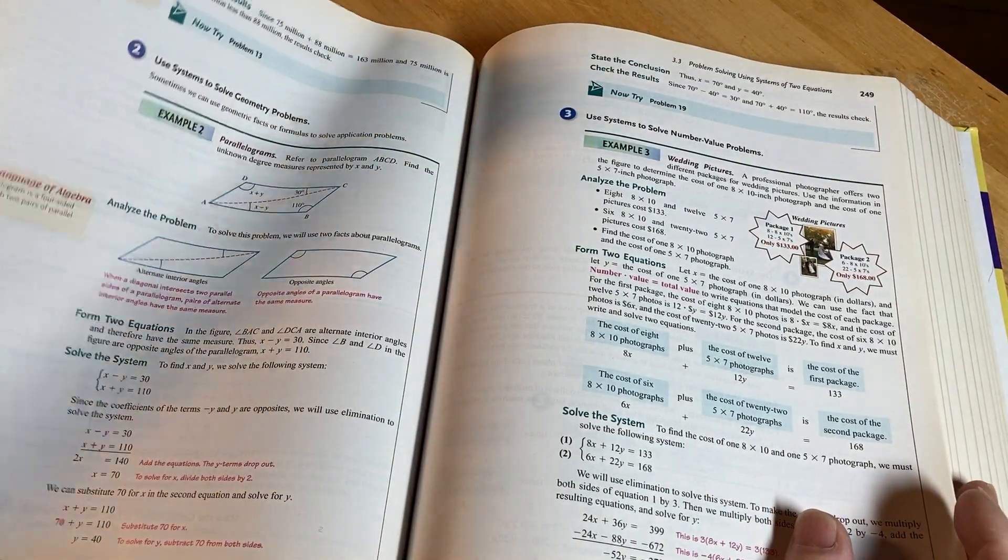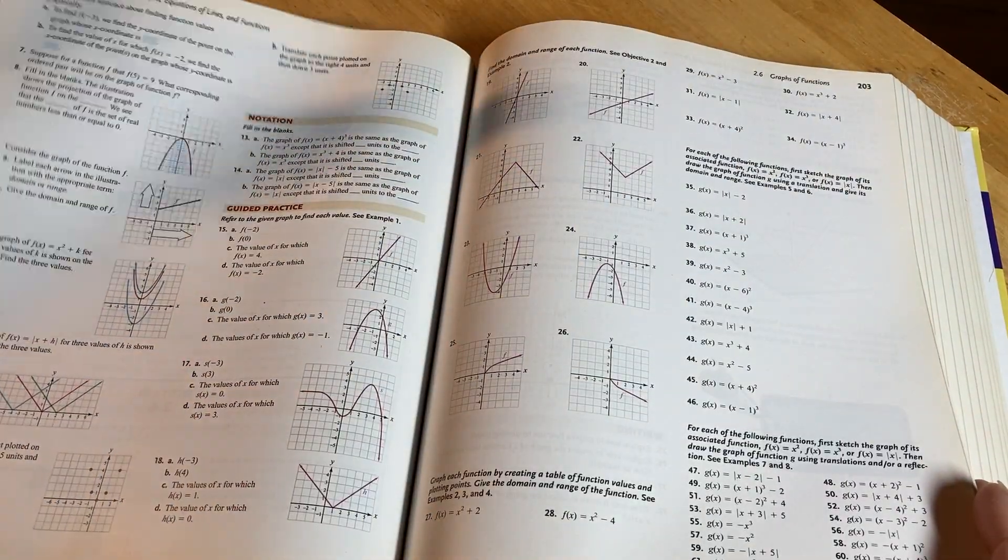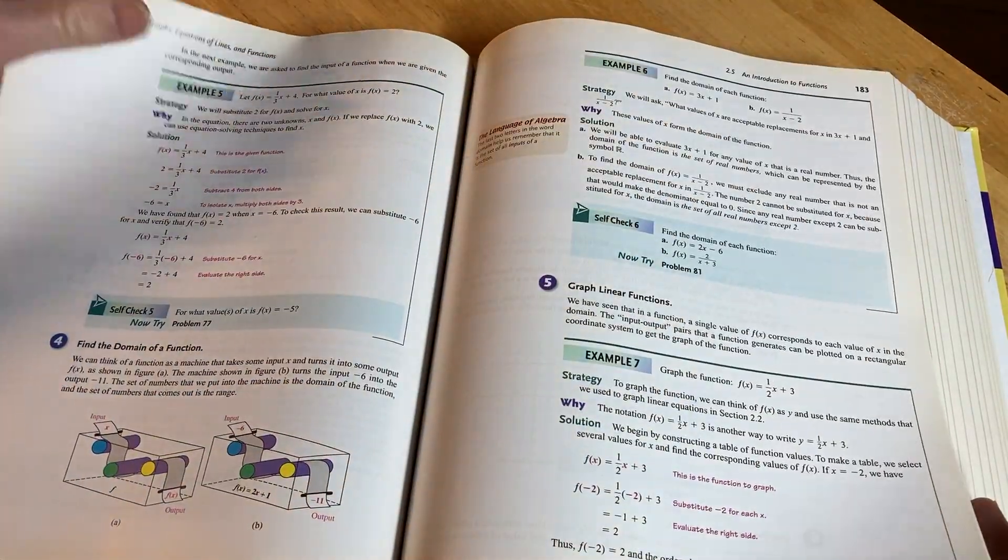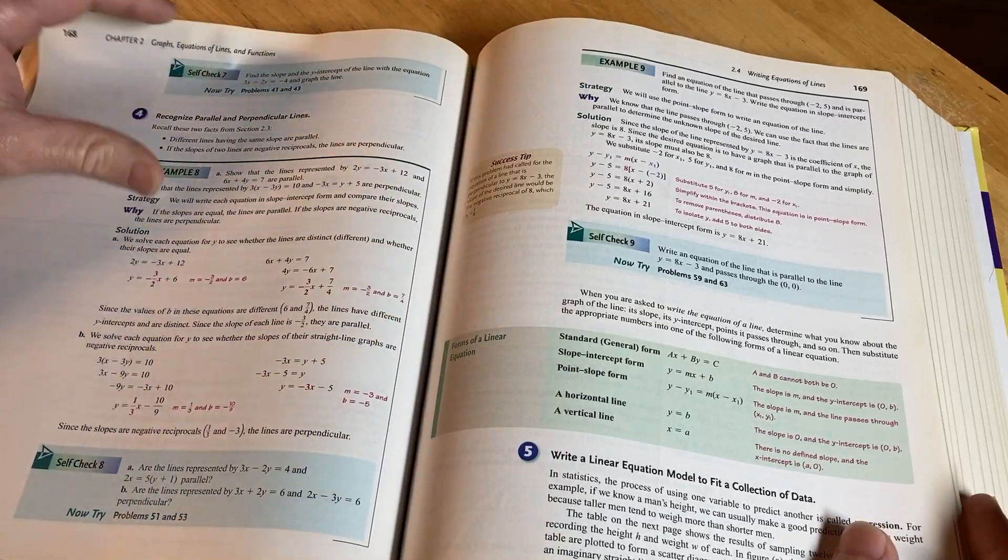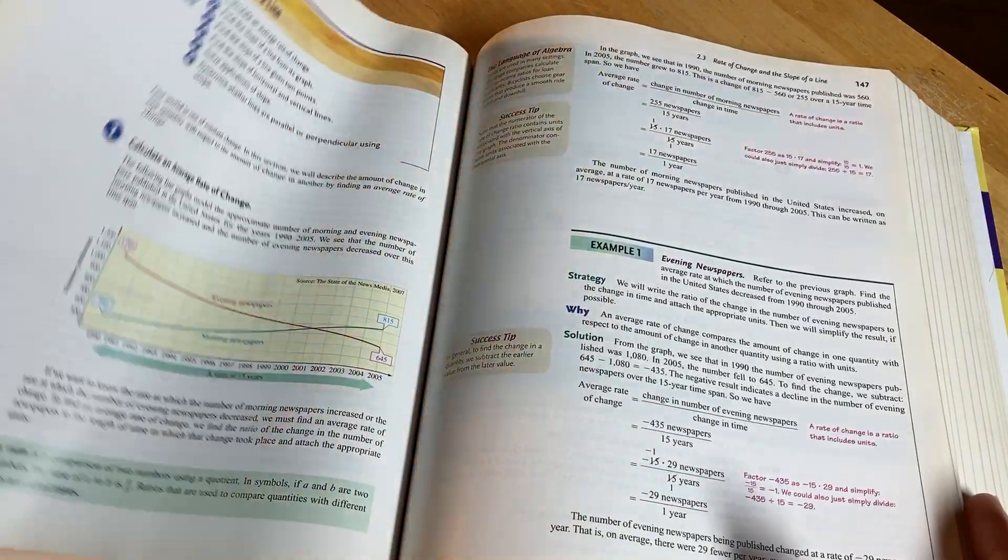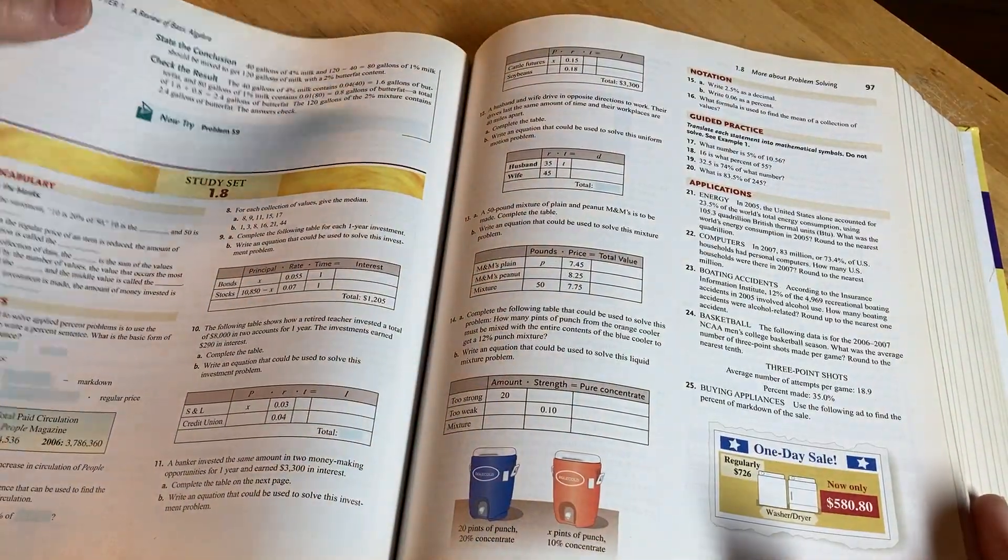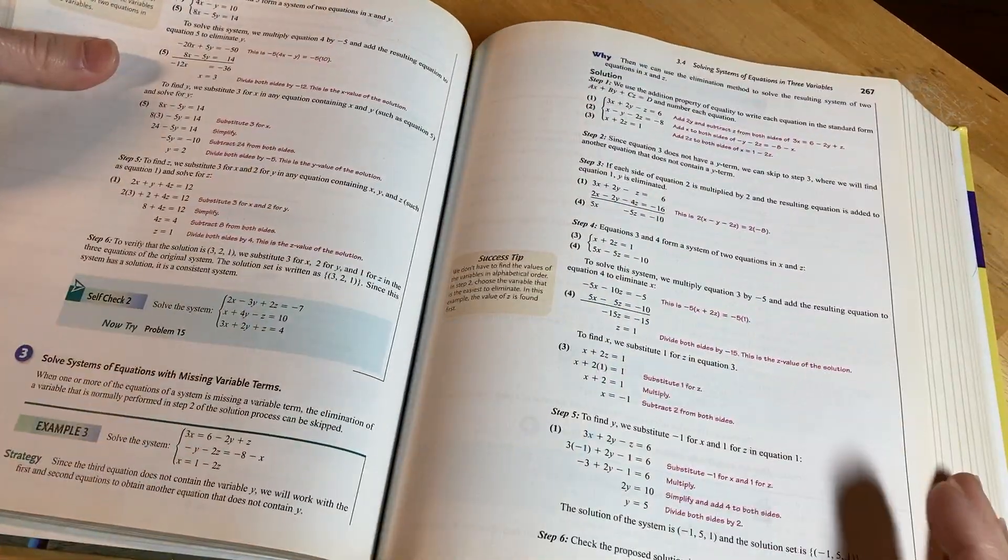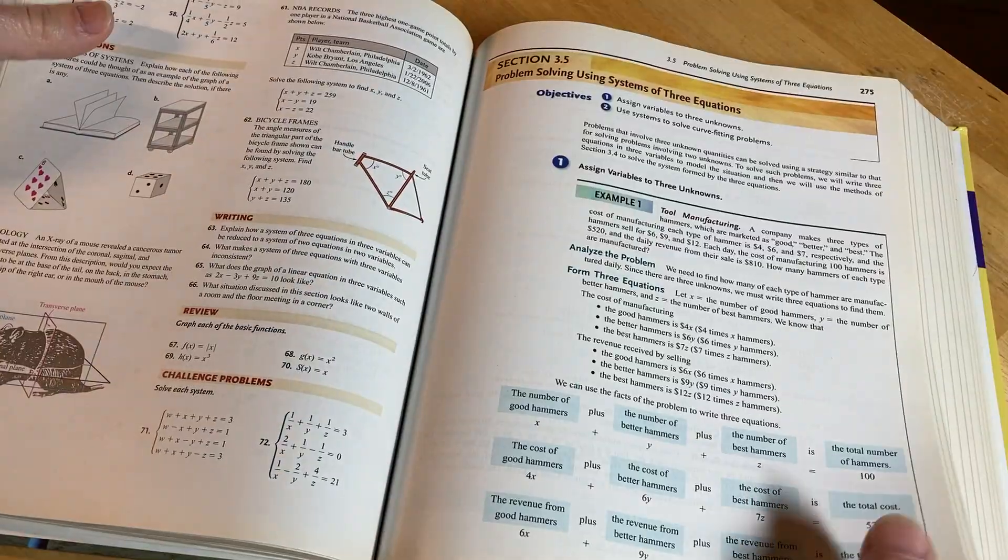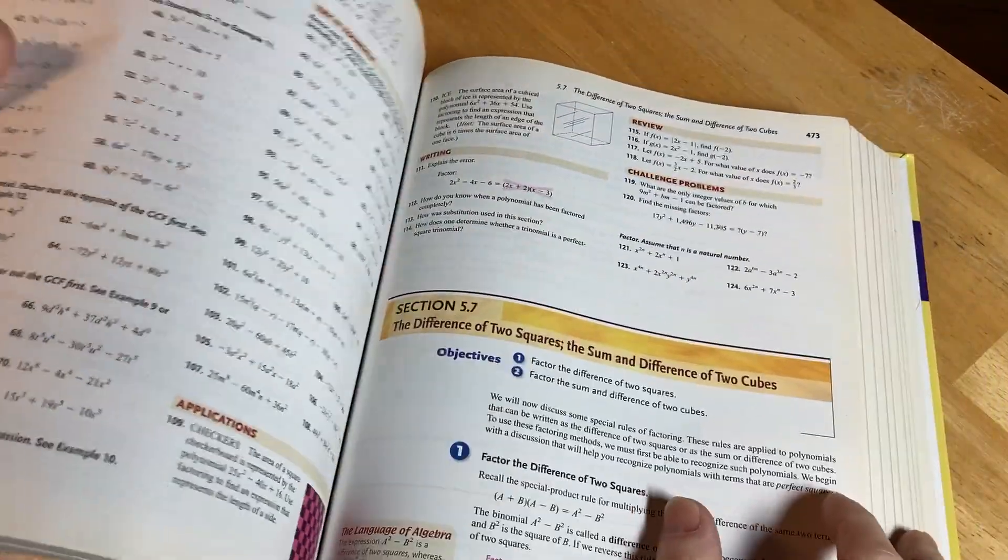So if you are missing mathematics, maybe you're older like I was when I started, maybe you had a bad experience in high school, maybe you didn't finish high school, or maybe it's just been a while and you're getting back into mathematics, or maybe you just feel like you've never been good at it. After watching this video, you will have some tips and guidelines and resources that you can use to get better at mathematics.